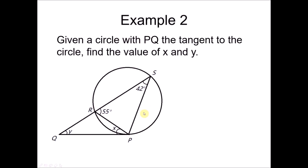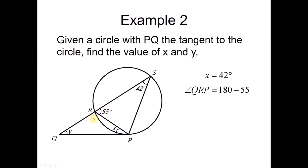Next example: given a circle with PQ as the tangent, find X and Y. RP is the chord, and the angle between the chord and the tangent is X. Using the alternate segment theorem, X equals 42 degrees. To find Y, we look at triangle RQP. Angle QRP equals 180 minus 55 equals 125 degrees. So Y equals 180 minus 125 minus 42, giving Y equals 13 degrees.